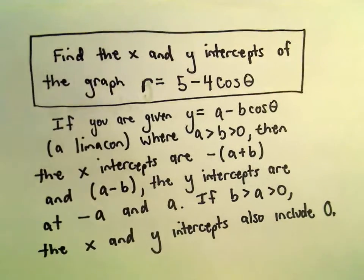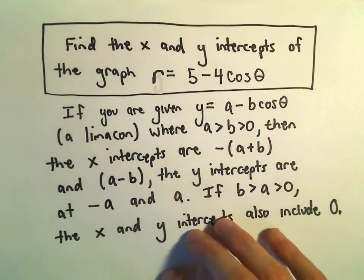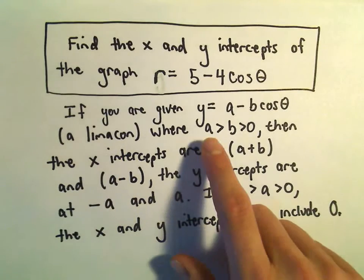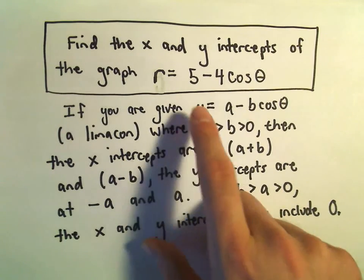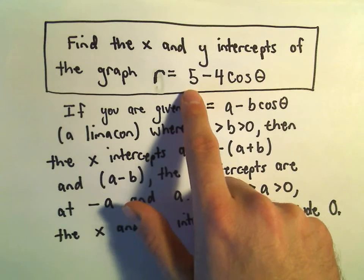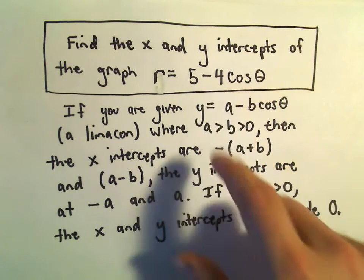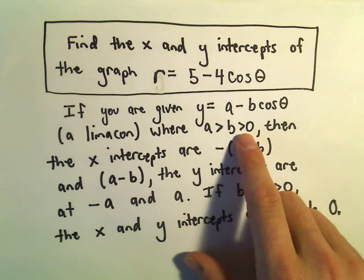For these types of graphs, what they're going to turn out to be is what's called a limaçon. If your a value is greater than your b value, so here our a value would be 5, kind of forget about the negative, your b value would be 4, and if both of those are greater than 0...